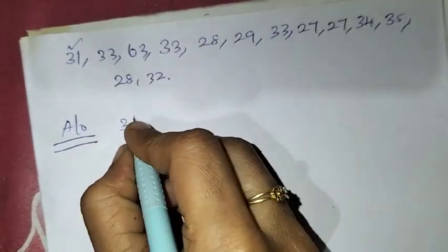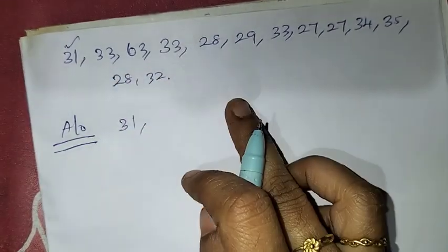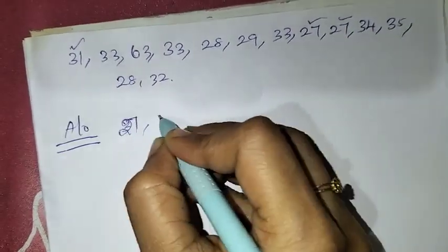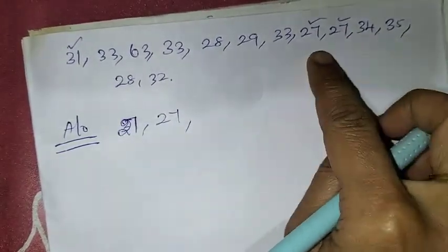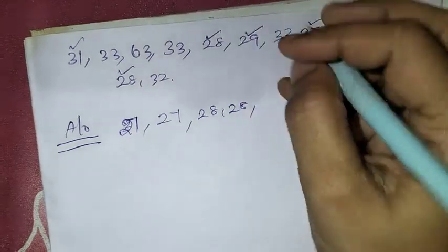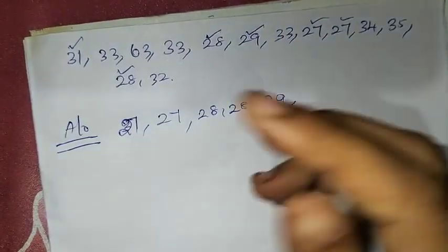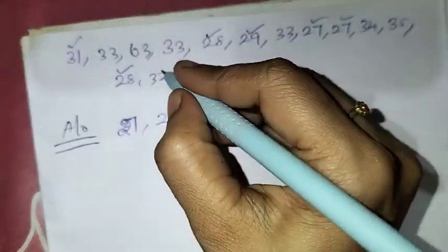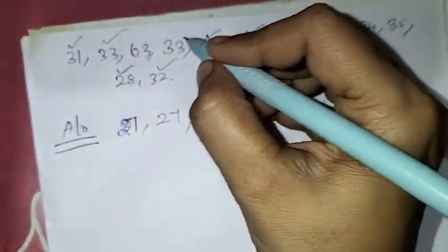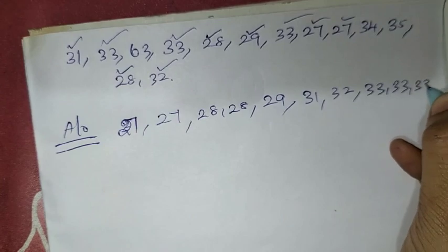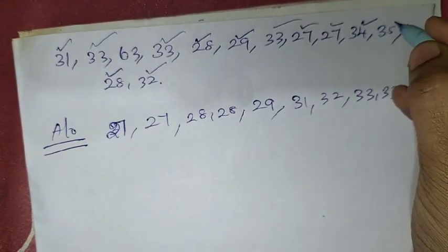Arranging in ascending order: first we have 27 (appears 2 times), 28 (appears 2 times), 29 (1 time), then 33 (appears 3 times), and 34 (1 time).